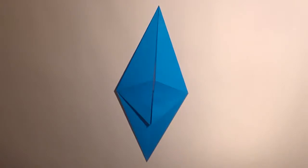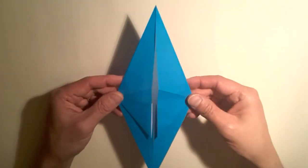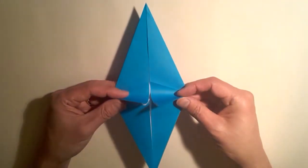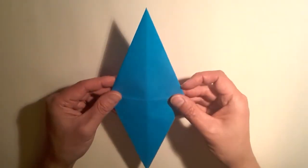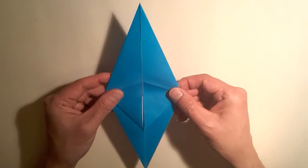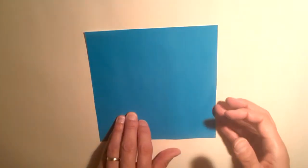In this video I'm going to demonstrate how to make the fish base. This is the fish base and we begin with a square sheet of paper. We're going to start with the white side up.